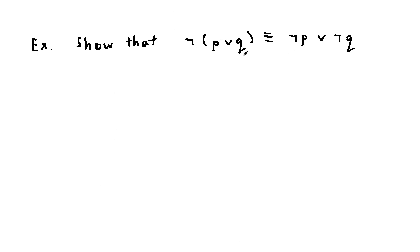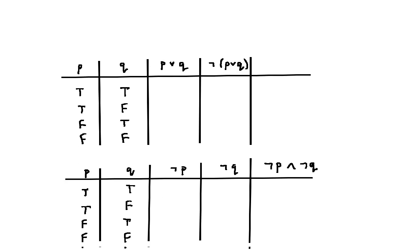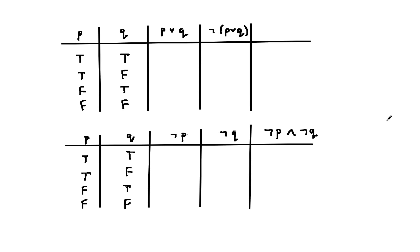Let's do another example: show that NOT(P or Q) is logically equivalent to NOT P or NOT Q. To do this, we'll just look at the truth tables. Here we made a table for NOT(P or Q), and here we have a table for NOT P and NOT Q. So we filled out the truth values for P and Q. Now let's fill out the truth values for P or Q: here P is true and Q is true, so this is true. Here Q is true, so we get T. Here P and Q are both false, so we get false.